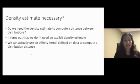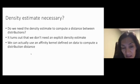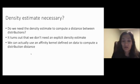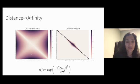Let's go further. Let's think about whether density estimation is even necessary. Do we even need density estimation to compute the distance between two probability distributions? It turns out you actually don't need an explicit density estimate. You can actually use an affinity kernel defined on data to compute a distribution distance.